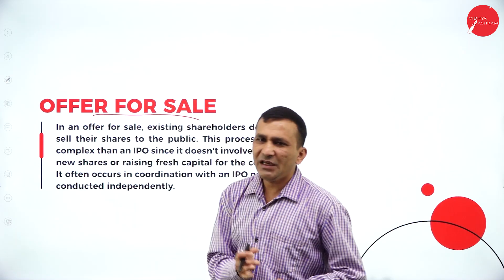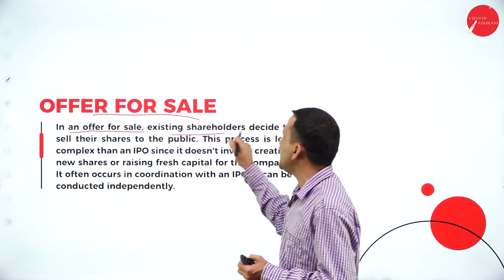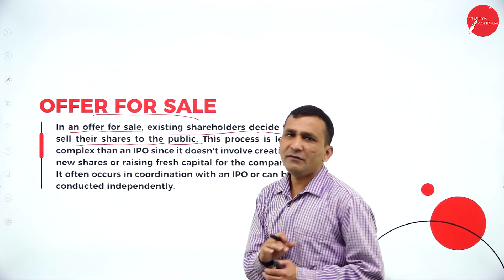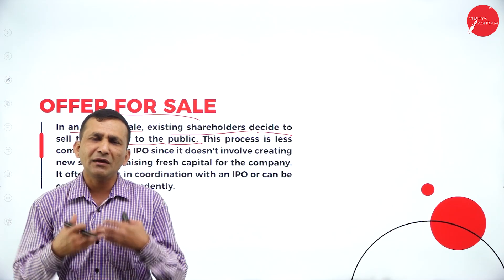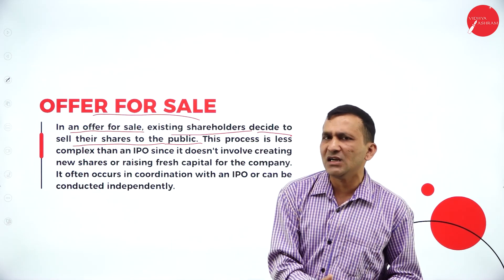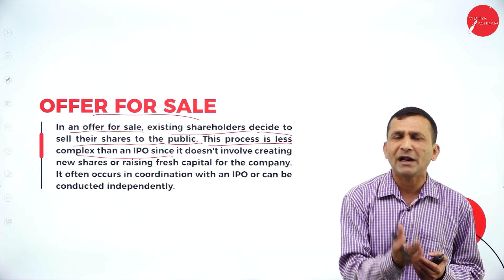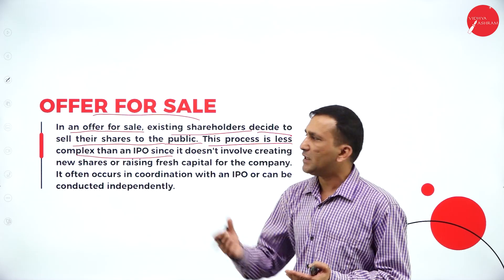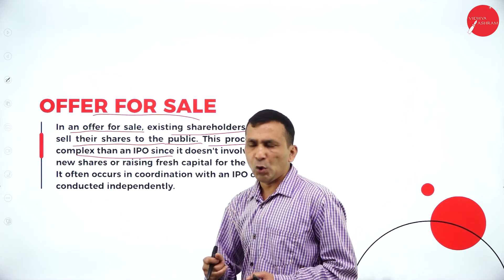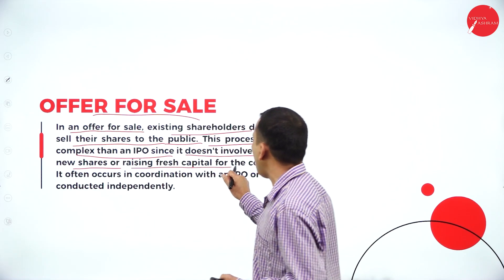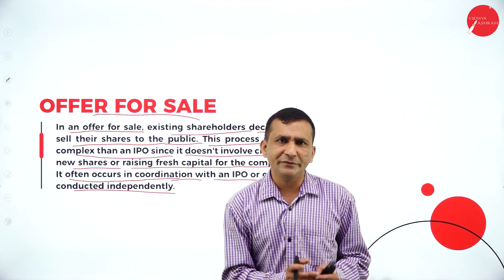Next: offer for sale. In an offer for sale, existing shareholders decide to sell their shares to the public, which is always there for the liquidity position. After purchasing, if you are expecting a profit immediately, you can sell — that is actually the offer for sale, which comes under the secondary market. This process is less complex than the IPO. IPO is the first time you go for the primary market. In the secondary market, the buying and selling happens in between investors. It does not involve creating new shares or raising fresh capital for the company.